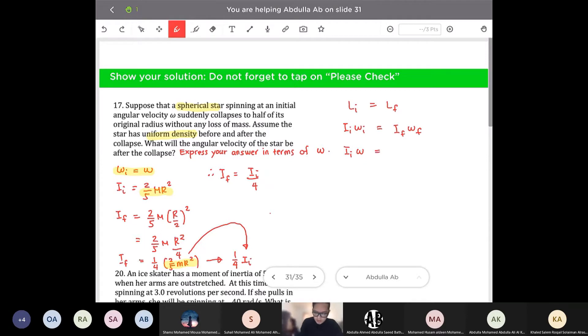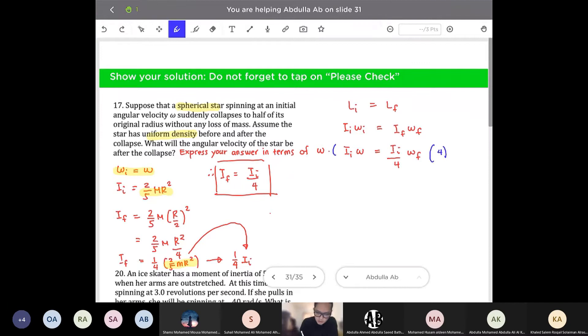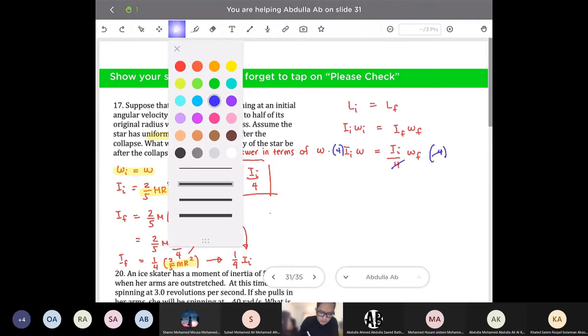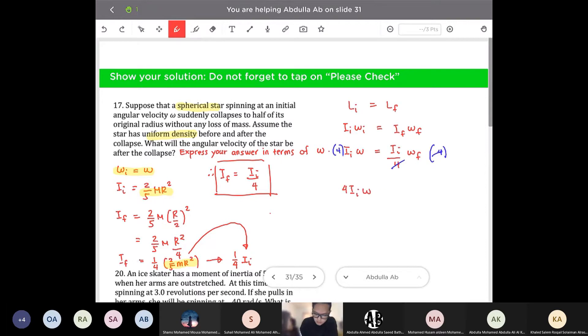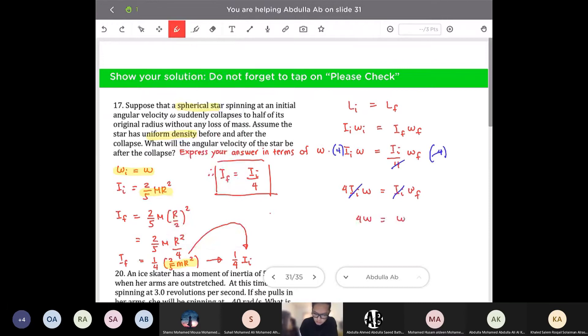And that is equal to my i final according to what we have derived earlier is i over 4. So I would substitute i initial over 4. That's my i final multiplied by what's being asked in the problem, which is the new angular velocity. So I will be multiplying both sides by 4 to get rid of the denominator on the right side of the equation. So I will now have 4 i initial omega is equal to i initial omega final. And I could also cancel the i initial on both sides of the equation such that my final answer becomes 4 omega is equal to the new angular velocity. This is the answer to the question. Or you could write omega final is equal to 4 omega.